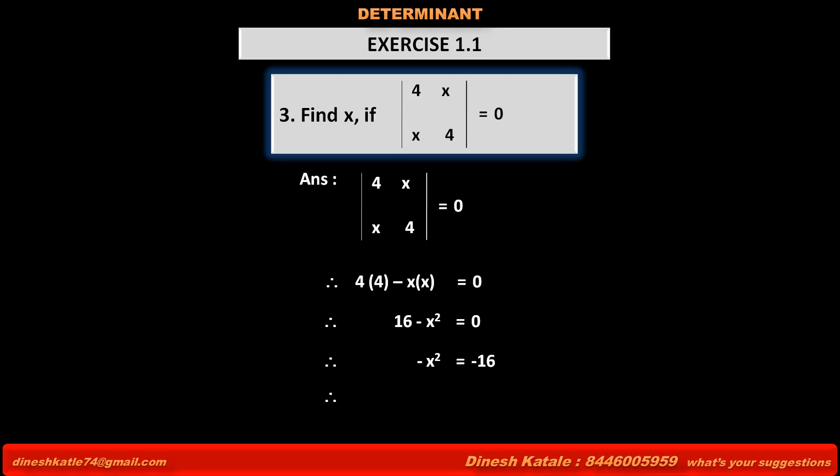Therefore, changing sign on both sides, we get X square is equal to 16. Therefore, taking square root on both sides, we get X is equal to plus or minus 4.